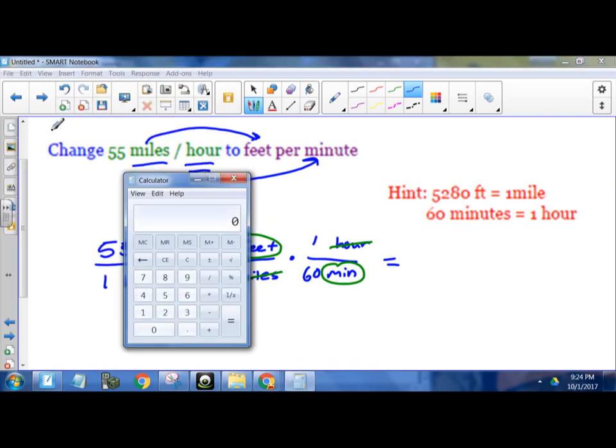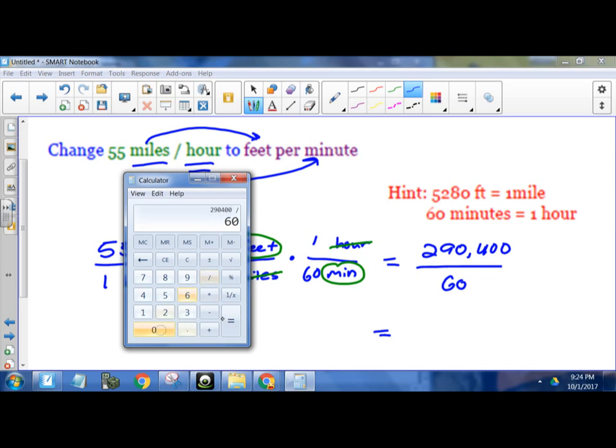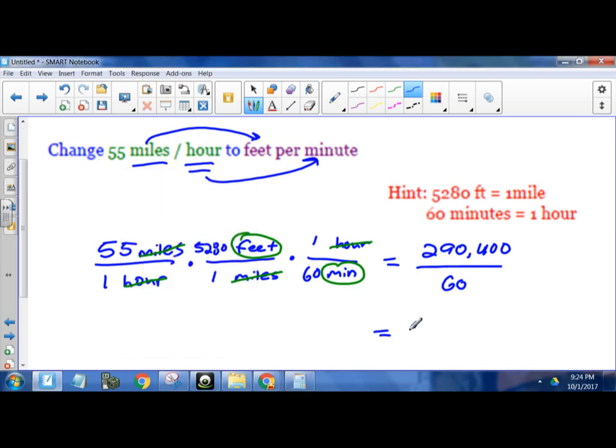So let's see what that would be. So we've got to do 55 times 5280 equals, so that's 290400 divided by 1 times 1 times 60, which is just 60. So that's going to equal, so that's going to take this guy and divide it by 60. We're going to get 4840.